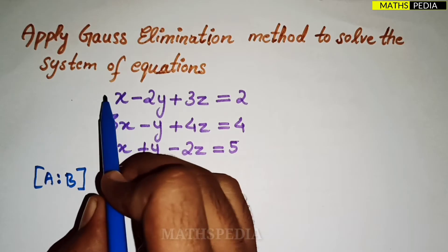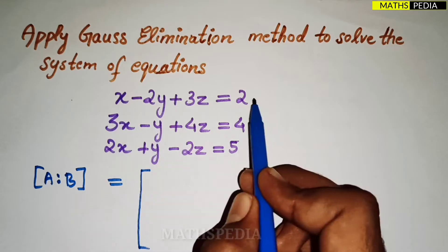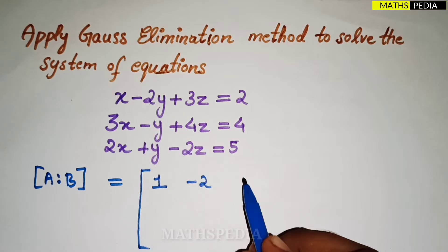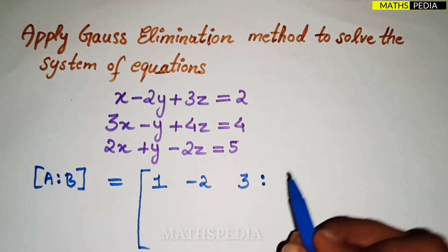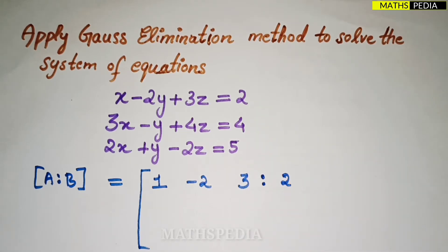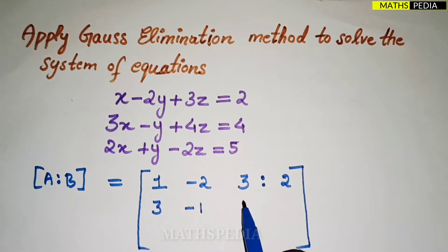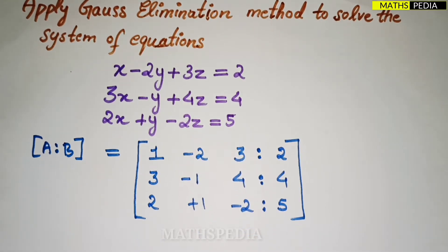We write the coefficients of each variable row-wise. For the first equation, the coefficient of x is 1, then minus 2 for y, then 3 for z, and the constant on the right-hand side forms the B matrix. The second equation gives 3, minus 1, 4, and 4. The third gives 2, plus 1, minus 2, and 5. So we have written the augmented matrix.